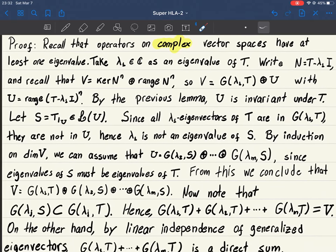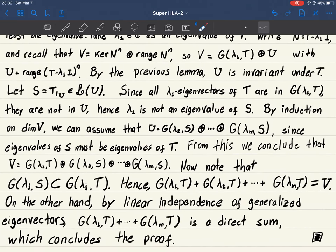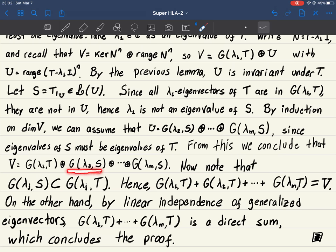But now we observe the following. What is this? This is the generalized eigenspace of operator S with respect to a number lambda 2. We can even assume these lambda 2, lambda 3, lambda m are the same as the eigenvalues of T.